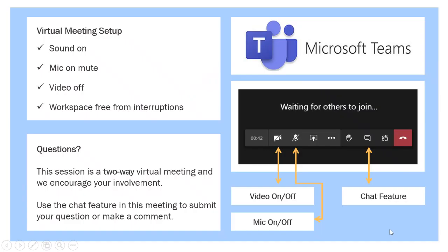As this is a Microsoft Teams event, certain aspects of your settings have already been automatically set. Make sure that your sound is on, your microphone is on mute, and your video is off. This is a live event. If you have any questions during the session, there is a chat function — look for the speech bubble at the bottom or top of your screen. One of our team members will be monitoring the chat, and we'll have a Q&A session at the end.